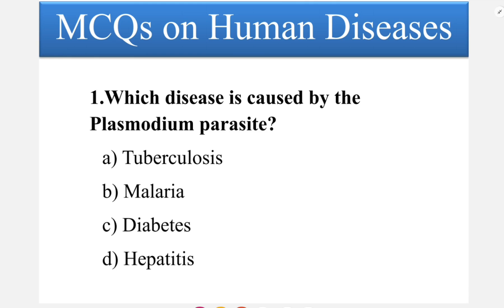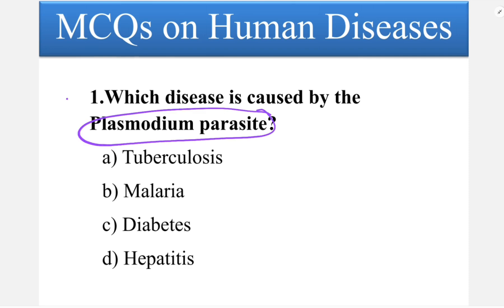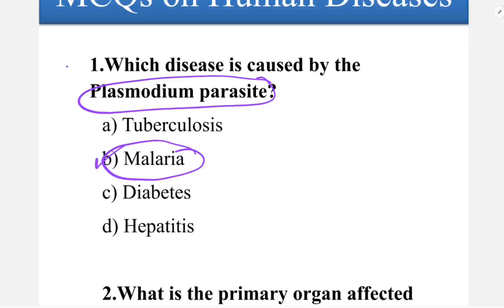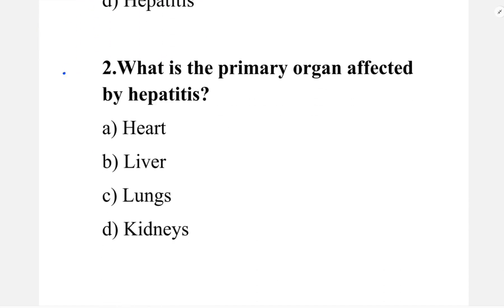Let's get started. First question: which disease is caused by the Plasmodium parasite? Option A: tuberculosis. Option B: malaria. Option C: diabetes. Option D: hepatitis. The correct answer is option B, malaria.